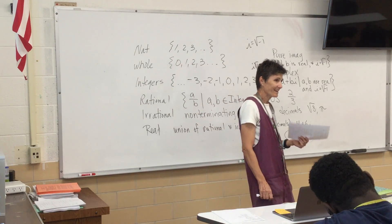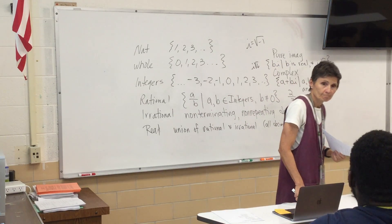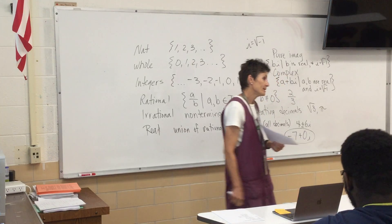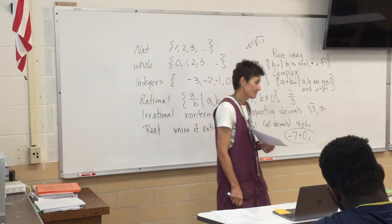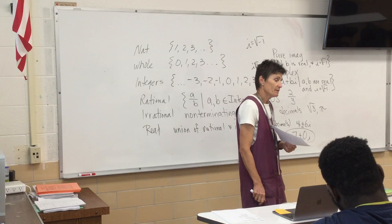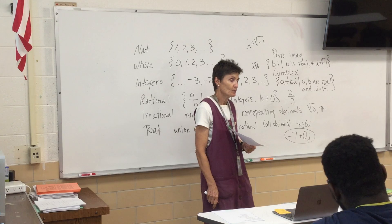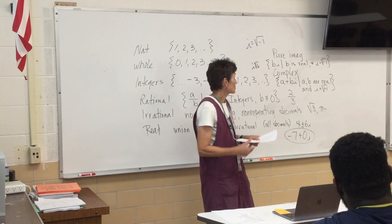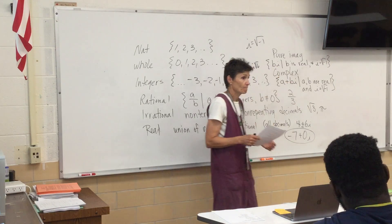Tricky one — square root of negative 4. Pure imaginary and complex. Because the square root of negative 4, as you learned last year, is 2i. It's of the bi form.